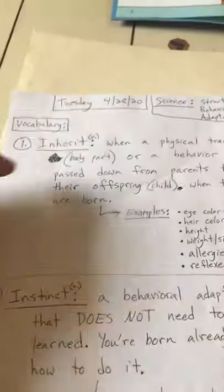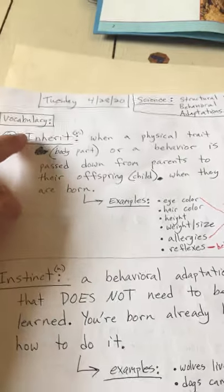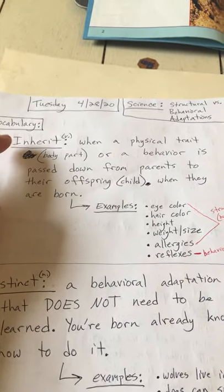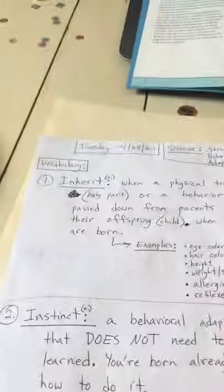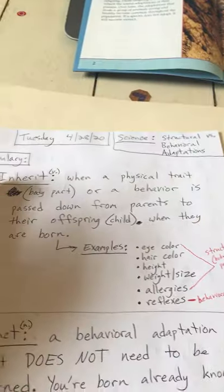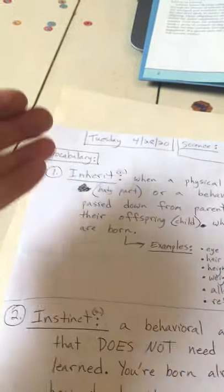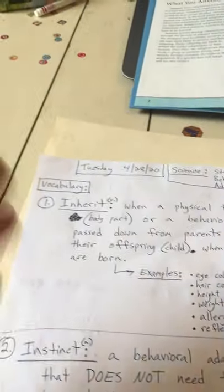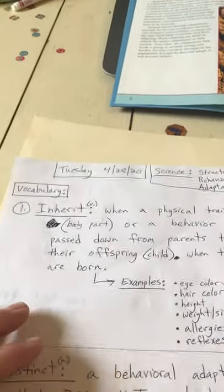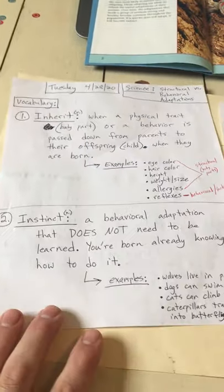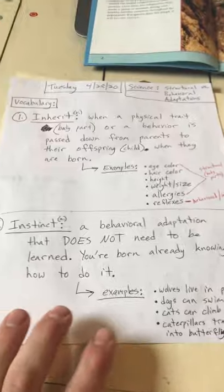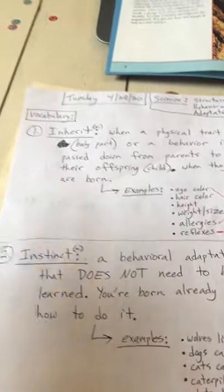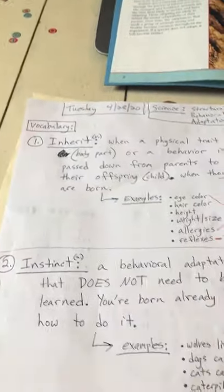Yesterday, we learned two new vocabulary words. Inherit is a verb. It means to basically get something from your parents. When you are born, you inherit certain traits from your parents. You don't need to be taught any of that — you are just born with whatever you inherited.